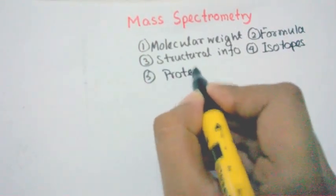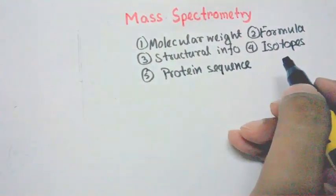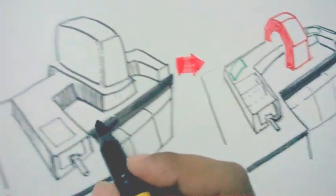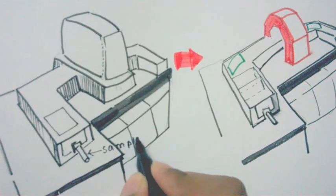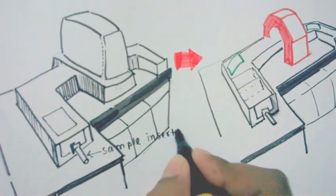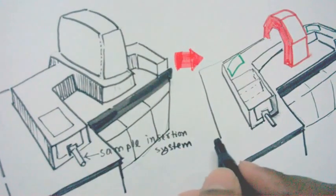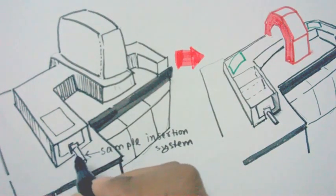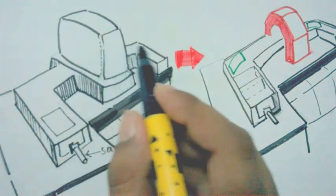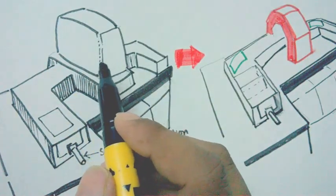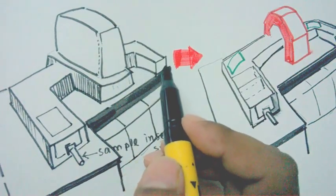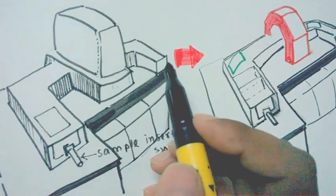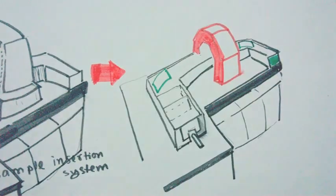Let's see how this mass spec works. Here we have our mass spec machine. There is a sample insertion port from where the sample is inserted. After the sample is inserted, it goes along a path where there is a huge magnet beneath the box. Under this magnetic field, the sample takes a curved path, and the radius of that curved path is detected by a detector, which ultimately tells us about the mass of the substance.